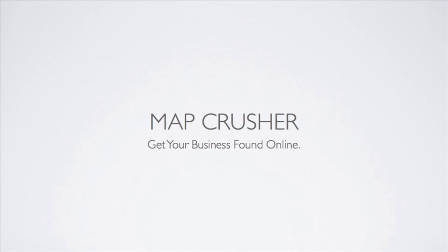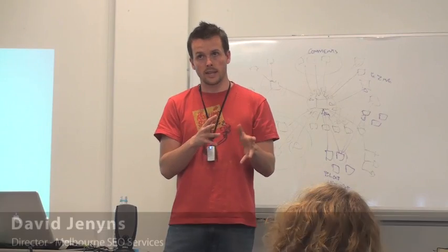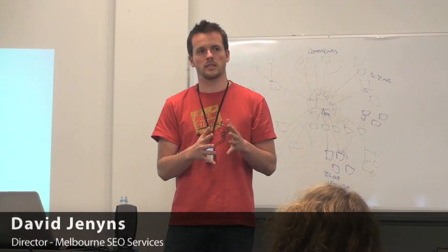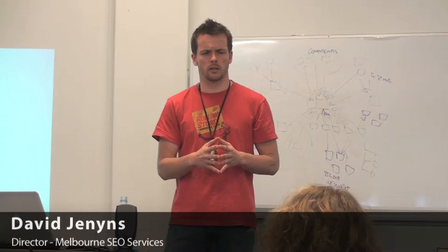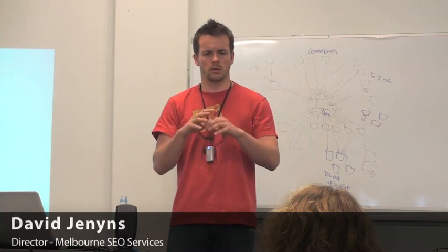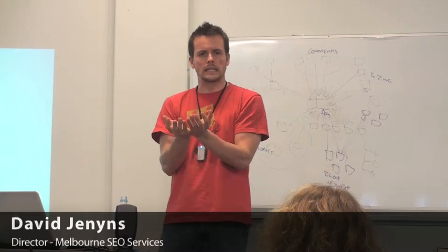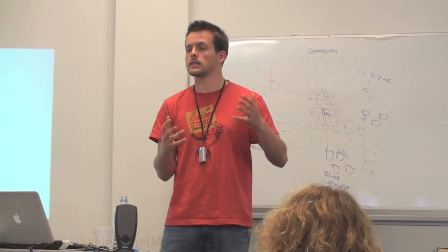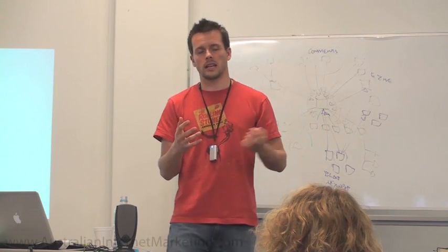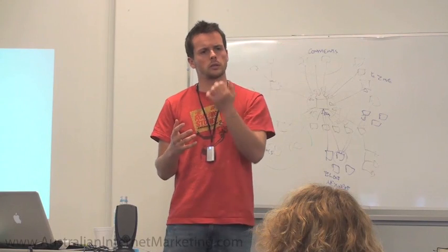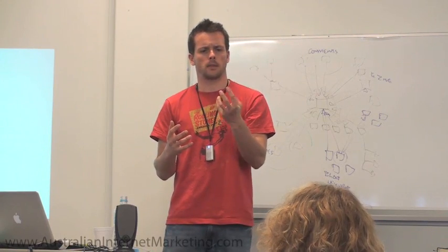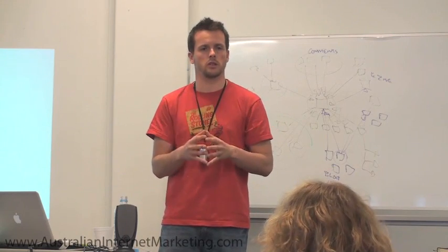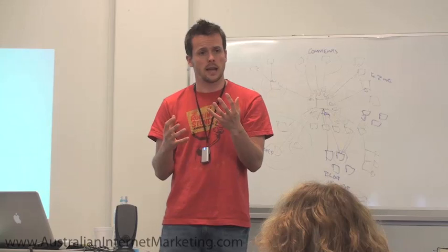In this session we're going to talk about how to make sure that your website comes up in Google Maps or Google Places. You might have seen recently, probably over the last six to twelve months, the organic listings start to change, where Google started to do a thing they called universal search. They tried images, pulled in videos, and also pulled in maps as well.